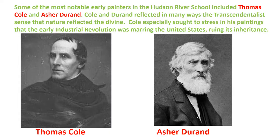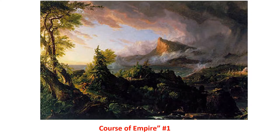Some of the most notable early painters in the Hudson River School included Thomas Cole and Asher Durand. Cole and Durand reflected in many ways the transcendentalist sense that nature reflected the divine. Cole especially sought to stress in his paintings that the early Industrial Revolution was marring the United States, ruining its inheritance. To make his point, Cole painted a series of five paintings in 1836, collectively referred to as the Course of Empire.